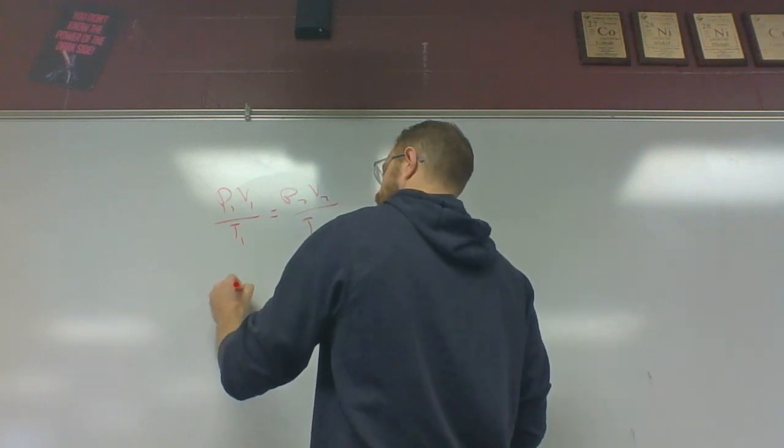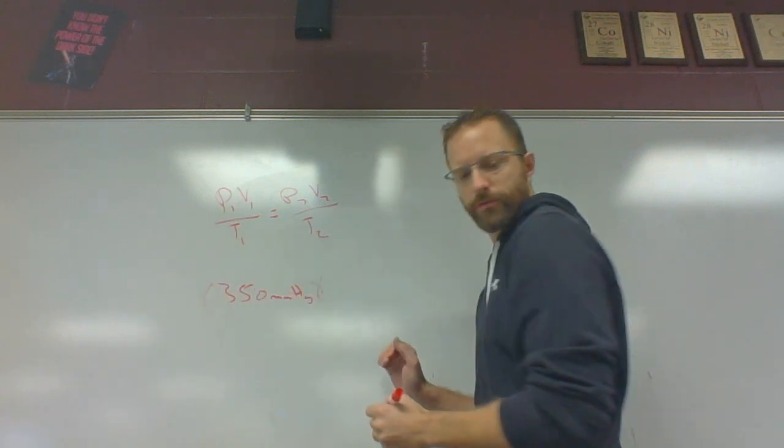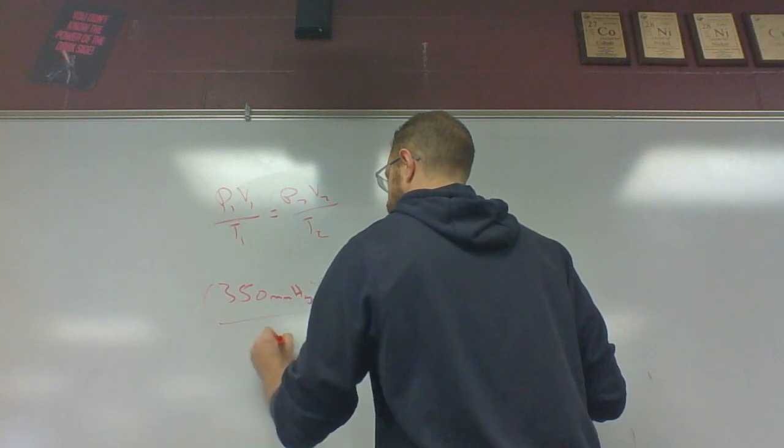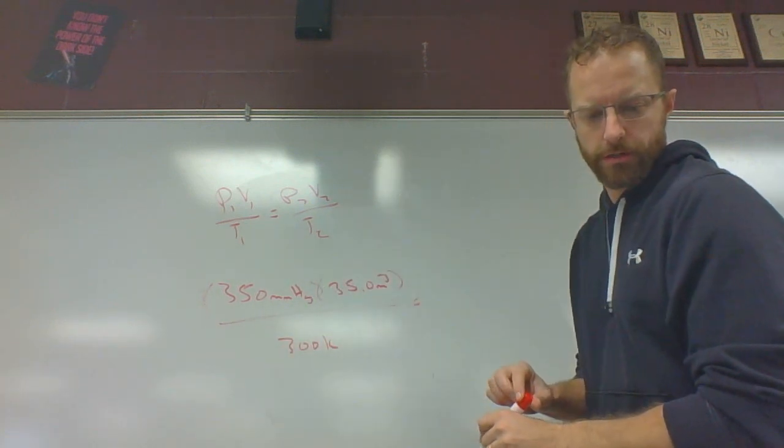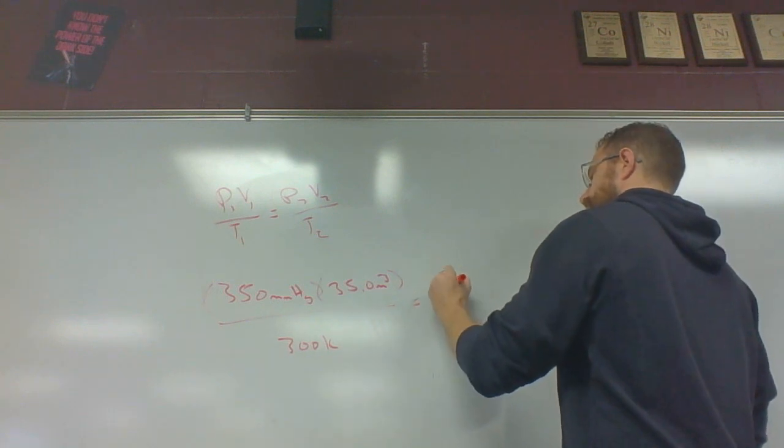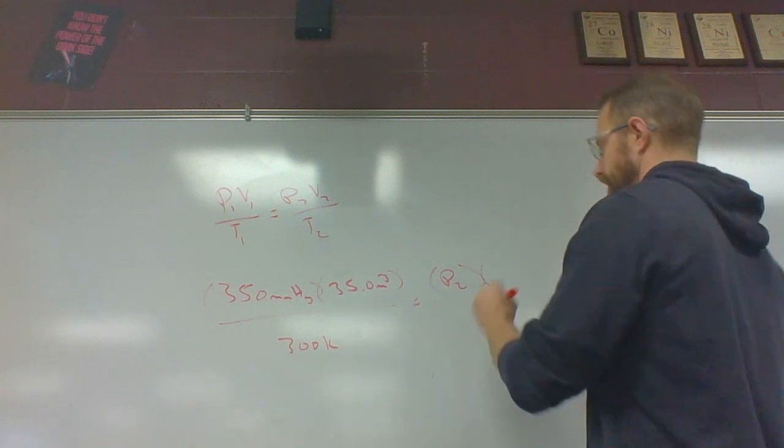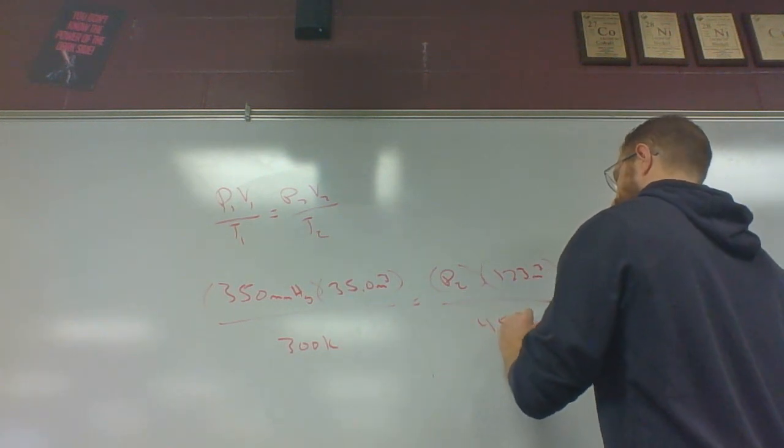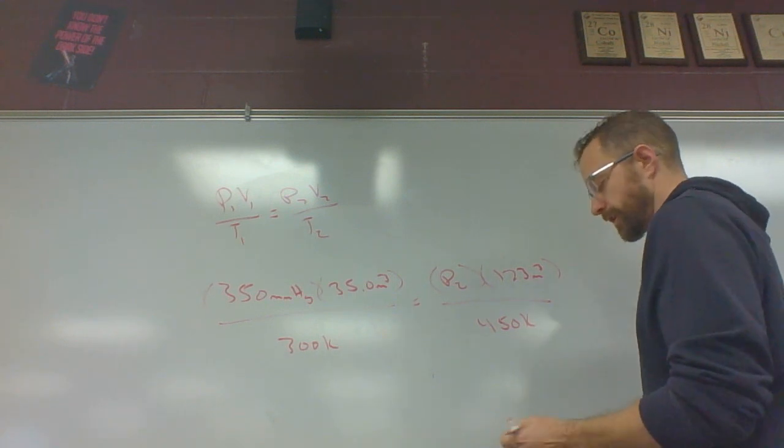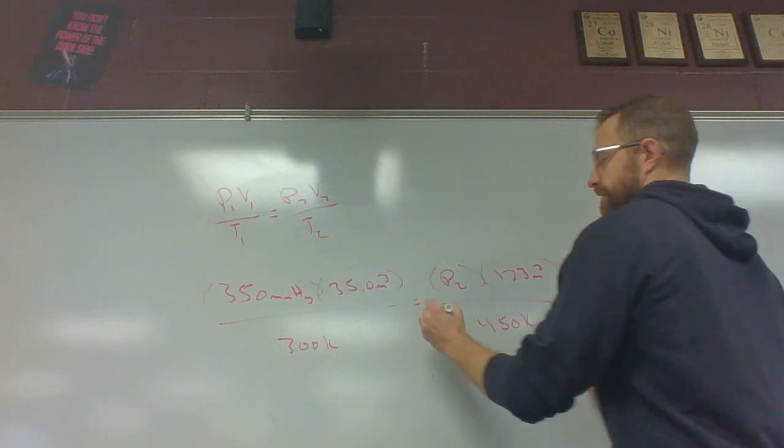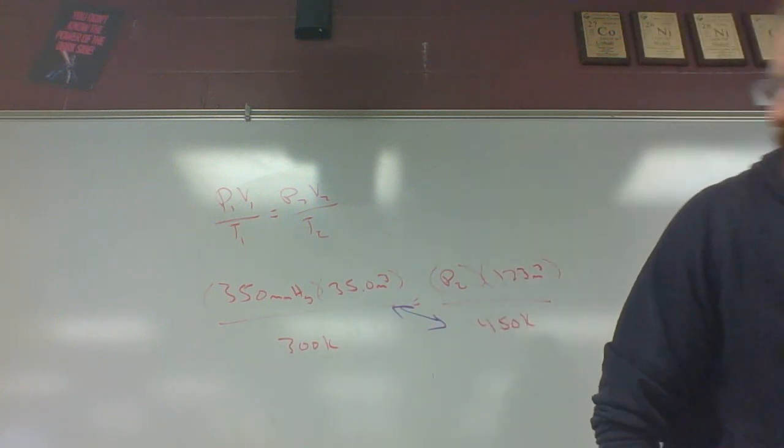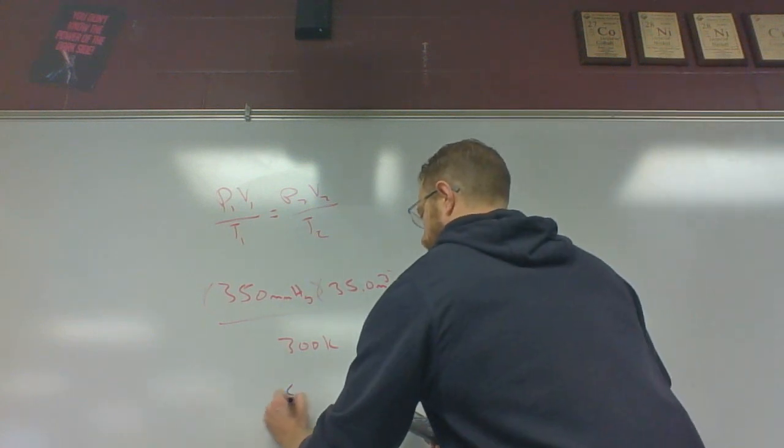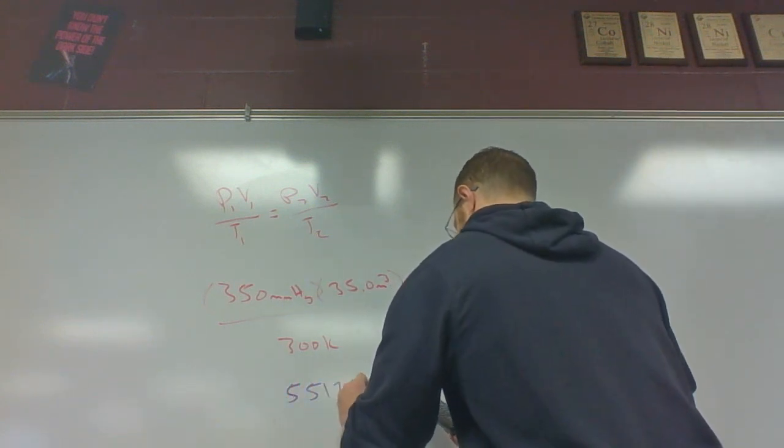So that's P1 V1 over T1 equals P2 V2 over T2. My initial pressure is 350 millimeters of mercury. My initial volume is 35.0 meters cubed. My temperature is 300 Kelvin. My new pressure is what I'm looking for. My new volume is 123 meters cubed, so it's grown. My volume went up, and my temperature went up to 450 Kelvin. So we're saying, what pressure will make this work?